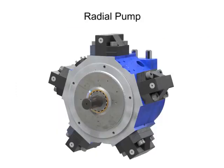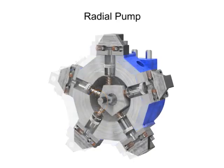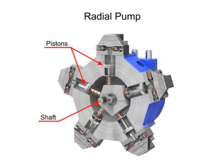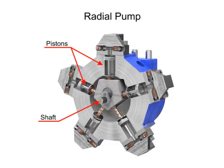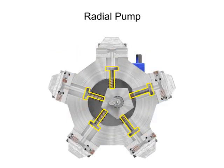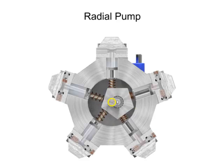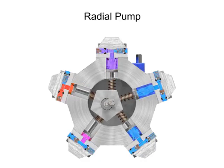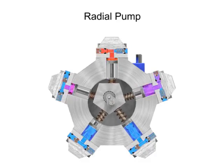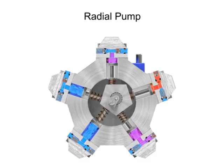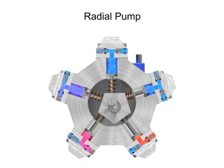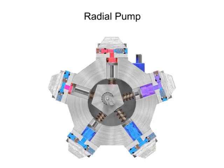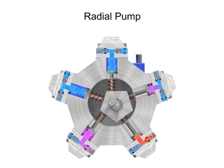Radial pumps are designed so the pistons stroke in a direction at right angles to the shaft. The pistons are arranged like wheel spokes around a cylinder block with an eccentric central cam mounted on a drive shaft. As the shaft rotates, the cam moves towards the pistons, forcing them down into the cylinder block and discharging the fluid. As the cam moves away, springs help retract the piston and cause the intake stroke. Check valves ensure that fluid only enters the inlet ports and only exits the outlet ports.